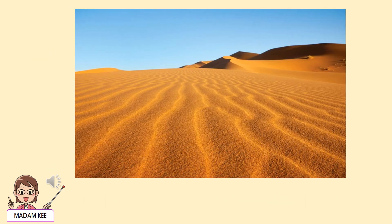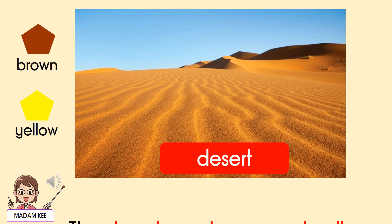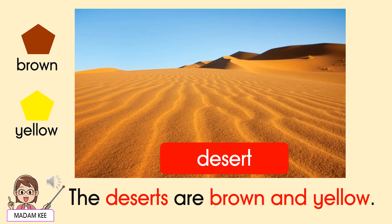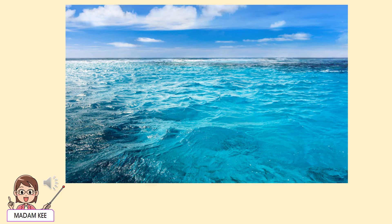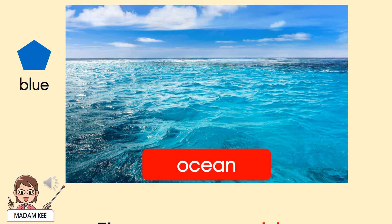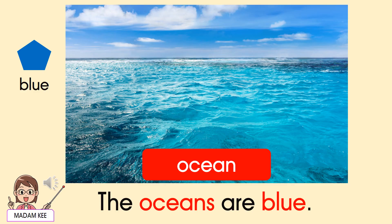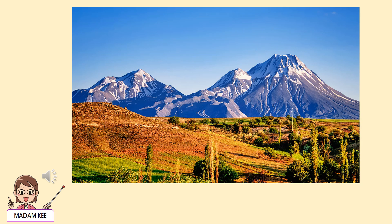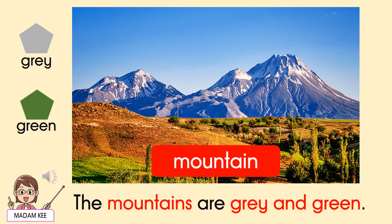Desert. The deserts are brown and yellow. Ocean. The oceans are blue. Mountain. The mountains are grey and green.